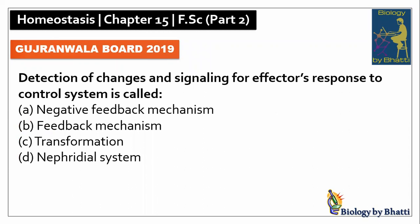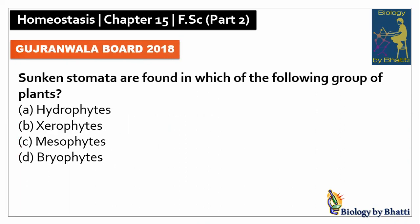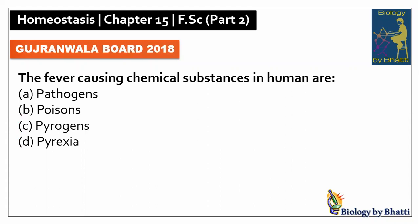In this paper, the detection of changes and signaling for effectors' response to a control system is called feedback mechanism, so the answer was B option. In another paper, the fever-causing chemical substances in humans are called pyrogens, so the answer was C option.